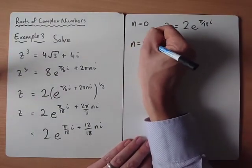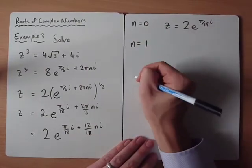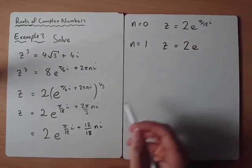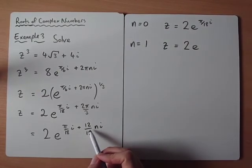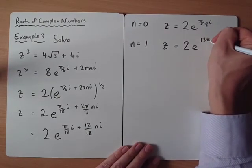it doesn't specify what the argument has to be between, so I'm just going to do 0, 1 and 2. We would get 2e, so now we can say we've subbed 1 and we've got 12 eighteenths plus 1 eighteenth, so it's easier to do that, isn't it? 13π over 18.